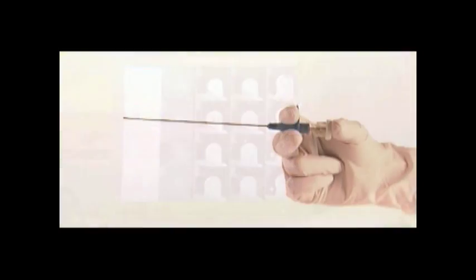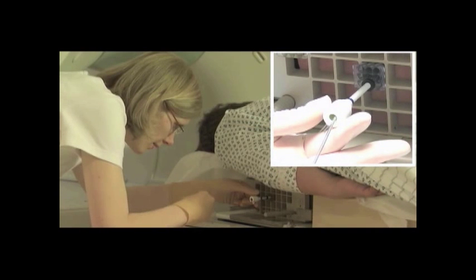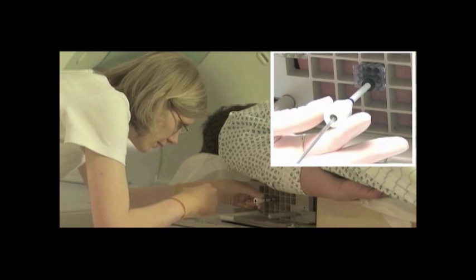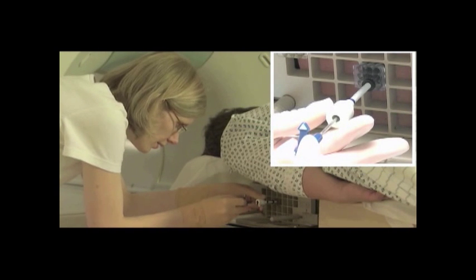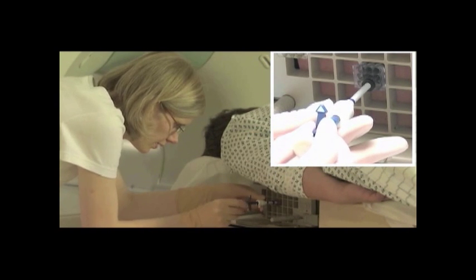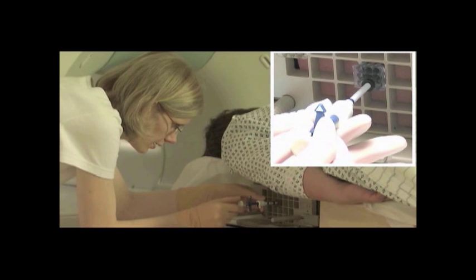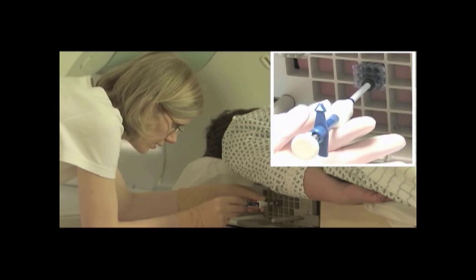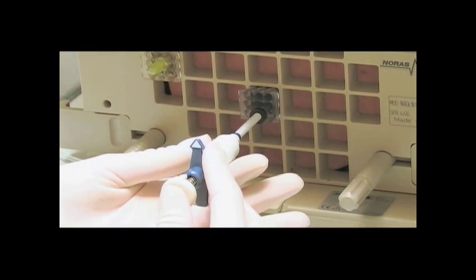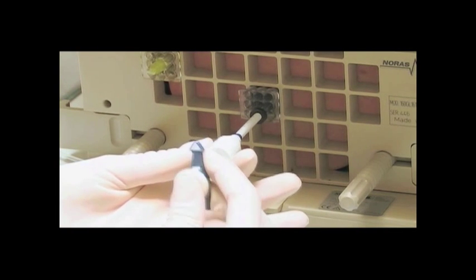You are now ready to place a biopsy site marker. The Atec TriMark biopsy site identifier will be used for this demonstration. Remove the localizing obturator and place the marker deployment device into the introducer sheath until the aperture indicator contacts the introducer sheath hub. To make sure this position is maintained throughout the deployment of the marker, hold the device in place with your free hand. Deploy the marker by pressing the plunger with your thumb. An audible and tactile click will confirm deployment.